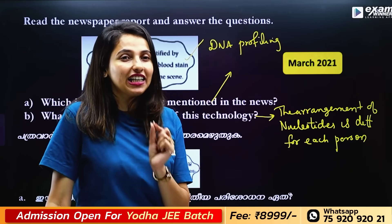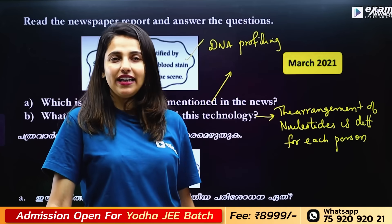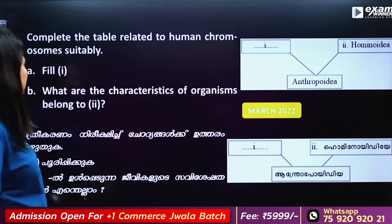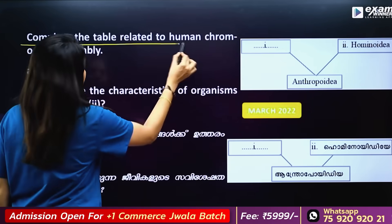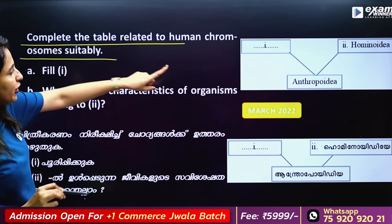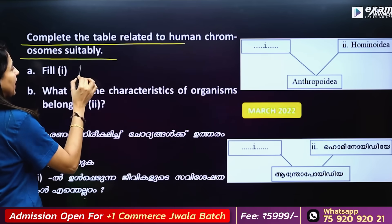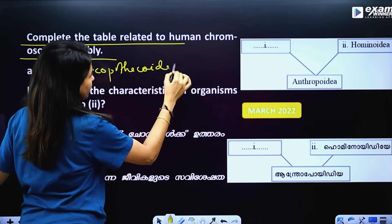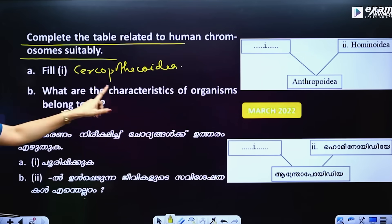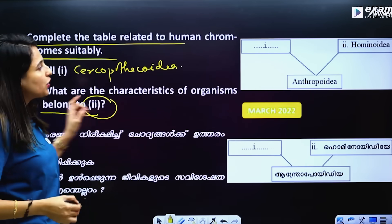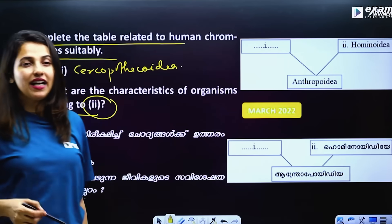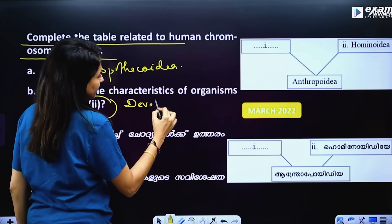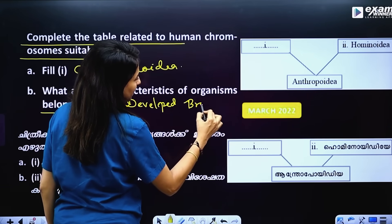The characteristics of the organism belong to hominids. What is a hominid? These are characters like short tail and developed brain.